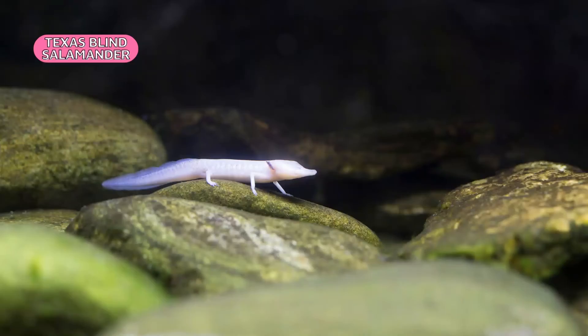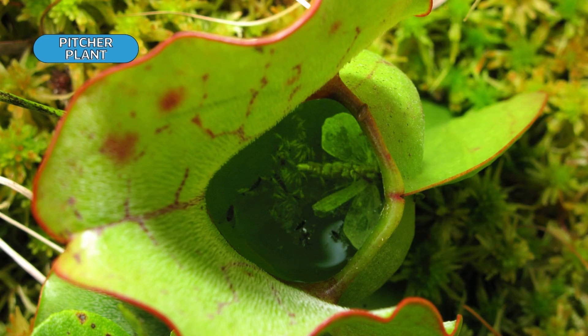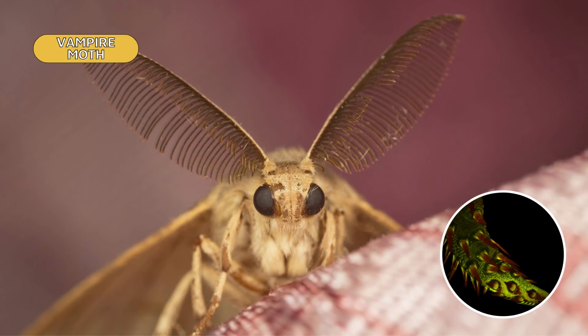Earth is teeming with life that is full of variety — animals with no eyes, animals with eight eyes, plants that eat moths, and moths that drink blood. But how does it all fit together? Let's discover that today in this episode all about biological organization.